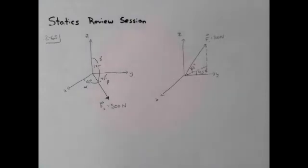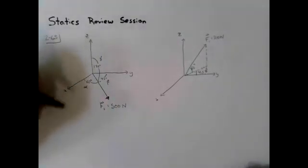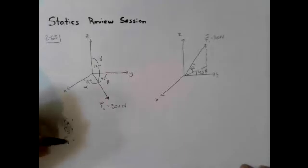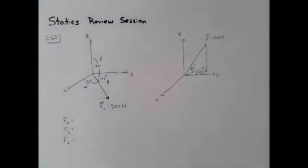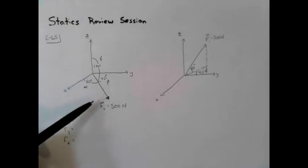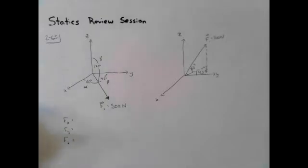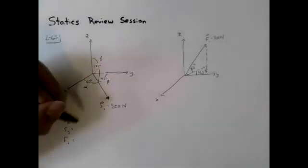So if we want the x, the y, and the z components of this vector, how would we get the x component? If we were talking about the left one, then for the x component, all you would have to do is just do the 500 times cosine of 60 degrees.